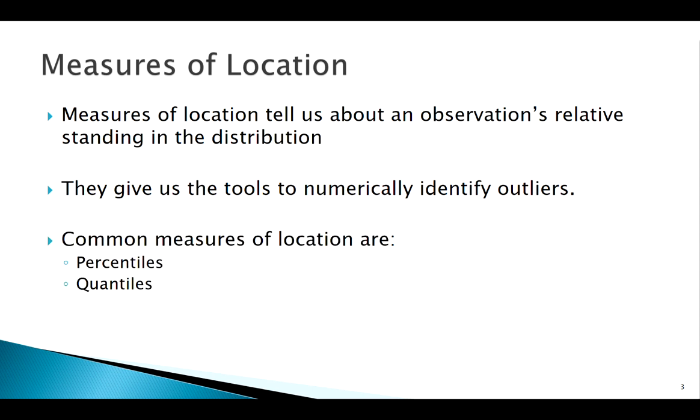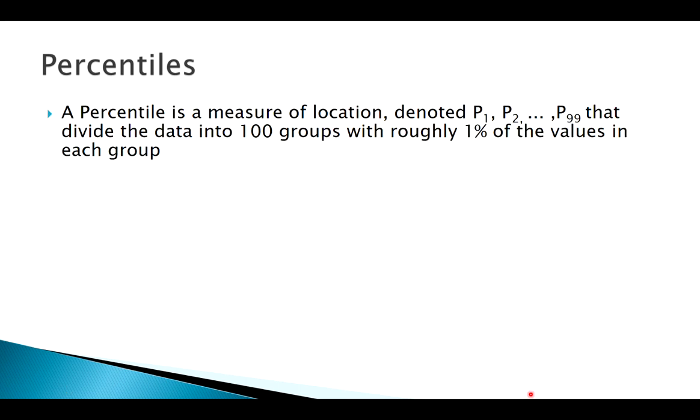So a measure of location tells us where does a given observation stand in regards to the rest of the distribution, and we use these as the building blocks to quantify outliers. So the common ones that we're going to look at here are percentiles and quantiles. The first measure of location that we're going to talk about here is something you've probably heard of, a percentile. So notation wise, sometimes percentiles may be written different ways, but the idea here is that we're dividing or we're segmenting up our distribution into a hundred little segments.